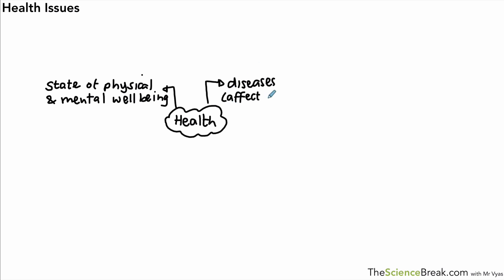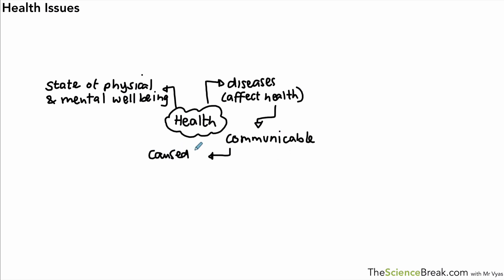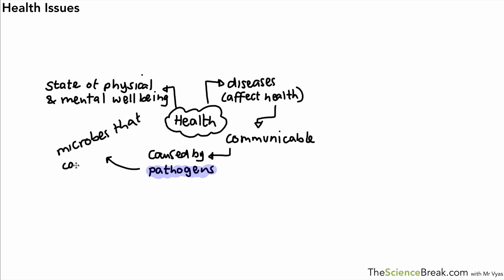Diseases affect health and we tend to group them into two main kinds. The first group is what we call communicable diseases. These are diseases that can be caught, and they are caused by microorganisms called pathogens. Pathogens is a key word — it means a microorganism or microbe that causes a disease.